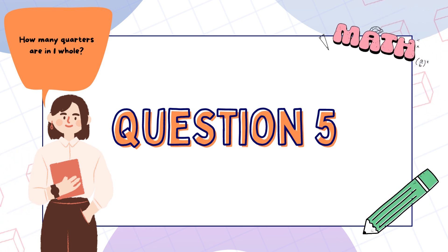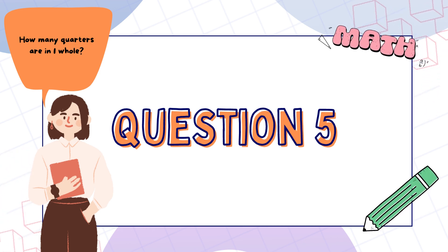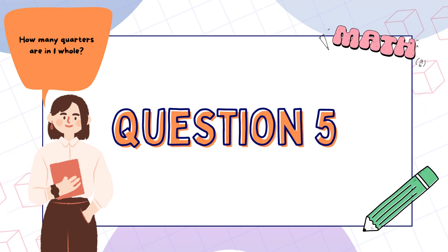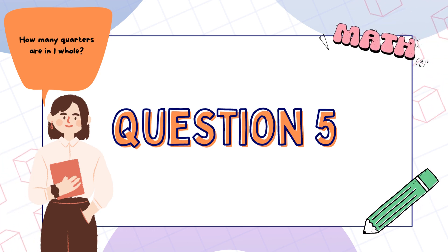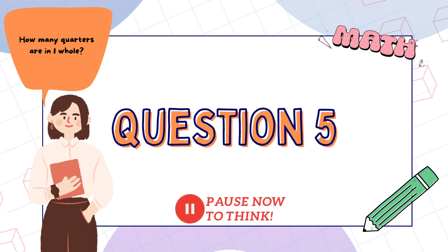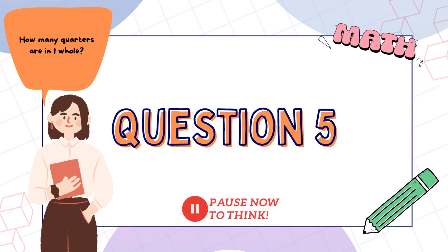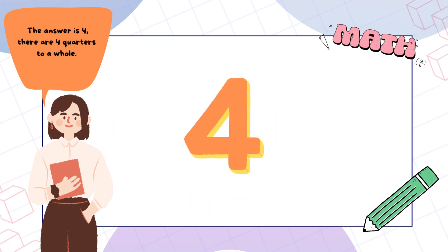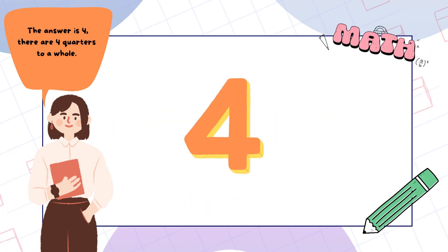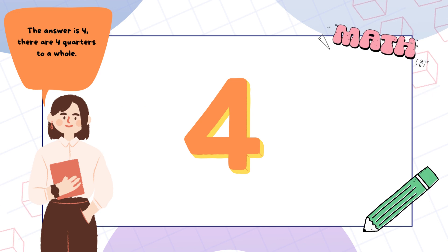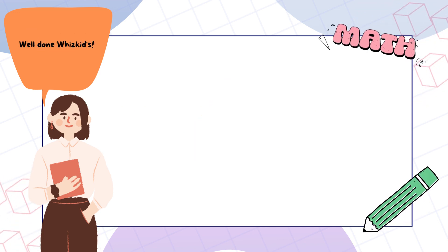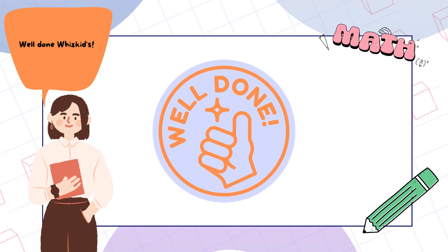Question five: how many quarters are in one whole? Pause now to think. The answer is four — there are four quarters to a whole. Well done, WizKids.